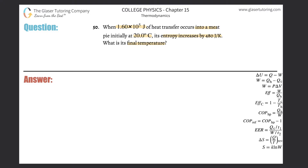This problem piggybacks off the prior two, so check them out for further clarification. I'm going to be using this formula down here on the bottom right. It says that the change in entropy of an object or a particular system is equal to — think of it as having a delta — the change in heat energy either gained or lost, divided by the average temperature.